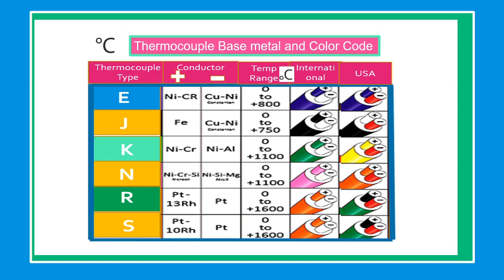For color code chart, refer to the chart for your reference. The temperature range in type E in degrees Celsius is 0 to 800 degrees. In type J, 0 to 750 degrees Celsius. In type K, 0 to 1100 degrees Celsius. In type N, 0 to 1100 degrees Celsius. In type R, 0 to 1600 degrees Celsius.